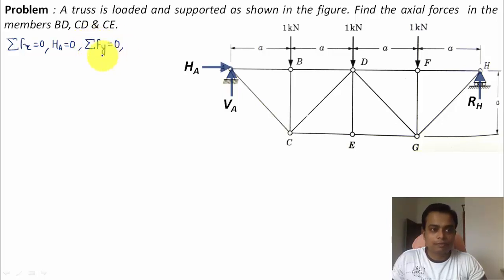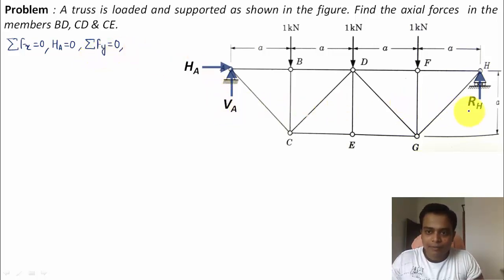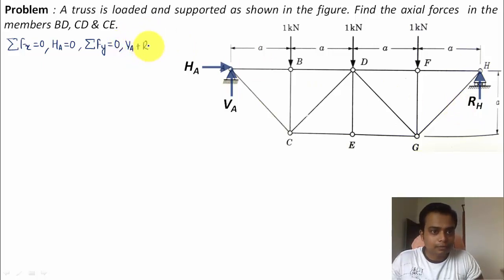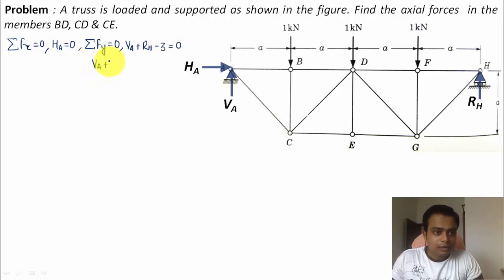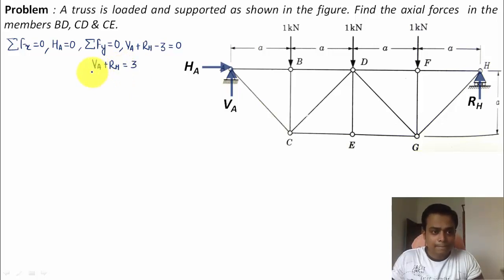Now applying the second equation of equilibrium: ΣFy = 0. VA and RH are both upward and hence positive. The three 1 kN loads act downward, so VA + RH − 3 = 0, which gives VA + RH = 3. We'll refer to this equation shortly.